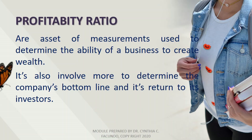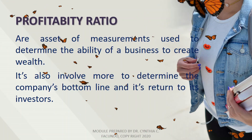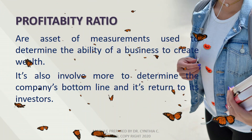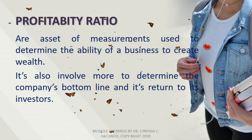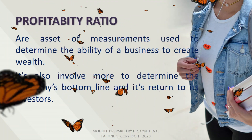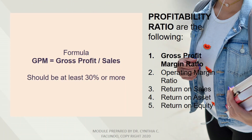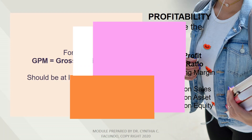Profitability ratios are measurements used to determine the ability of a business to create wealth. They are also used to determine the company's bottom line and its return to investors. Profitability ratios include: gross profit margin ratio, operating margin ratio, return on sales, return on asset, and return on equity.